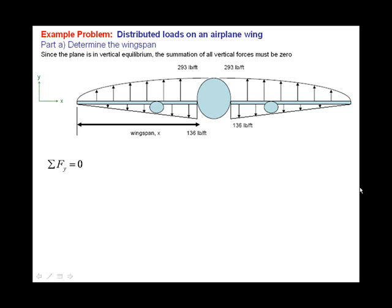Now, in order to solve this problem, to solve for the wingspan x, we'll need to take each of these distributed loads and turn them into equivalent concentrated forces. We find those equivalent concentrated forces by finding the area under each load curve. We have a parabolic distribution for the lift. The area of a parabola is 2 times the base times the height divided by 3, and the area of the triangle is 1 half the base times the height.